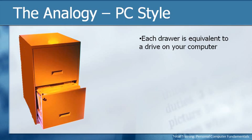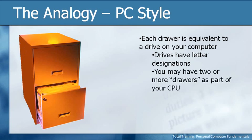In our analogy, each drawer in our filing cabinet is equivalent to a drive on the computer. On computers, drives have letter designations — A, B, C, D, and so forth. Depending on your computer, you may have two or more drives. On a home computer, you probably have at least two. It used to be a hard drive and a floppy disk; these days it's usually a hard drive and a CD or DVD. But you could have more.